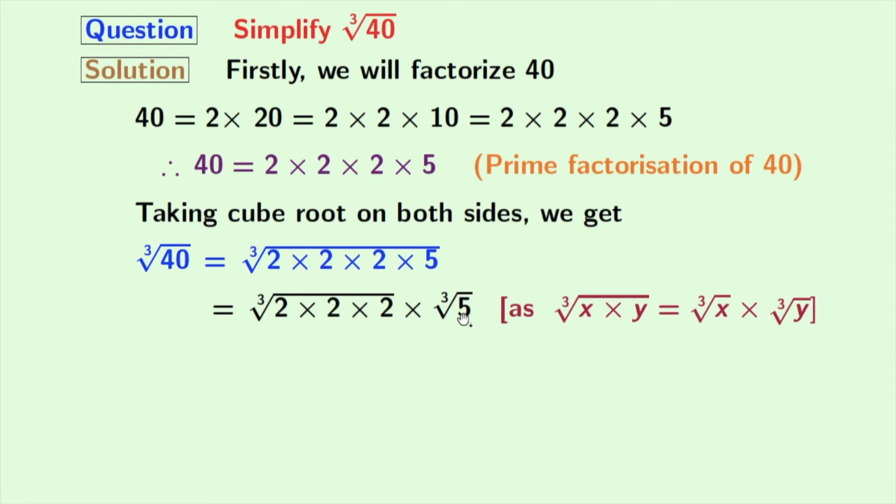Here the rule of cube root of x times y is equal to cube root of x times cube root of y is used. Here x is equal to 2 times 2 times 2 and y is equal to 5.